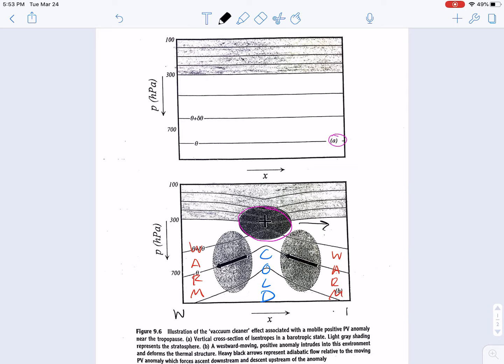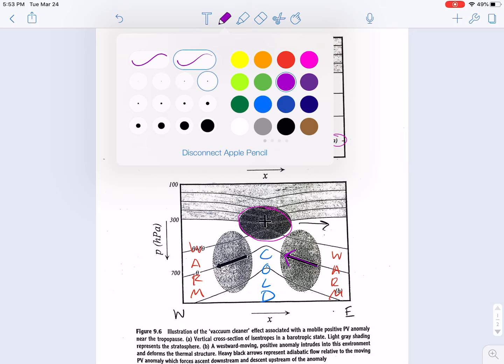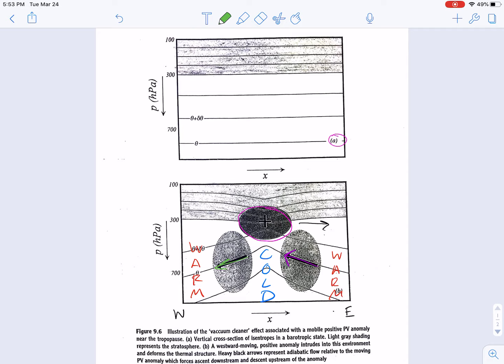And so if we have a typical east-west cross-section here, then we know our isentropes are going to deform relative to this positive upper-level PV anomaly, such that we would have rising motion along the eastward side of our positive PV anomaly, or our upper-level trough, and downward motion on the backside.